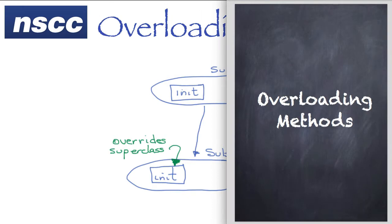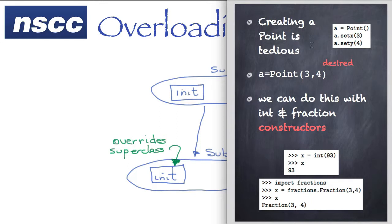We're going to look at overloading methods. We've created our point class before and instantiated an object using the point constructor, then set the x and y values. But setting values this way is pretty tedious.